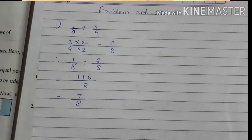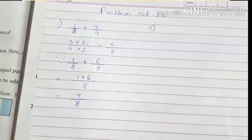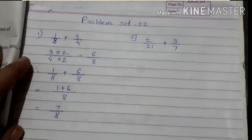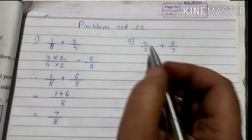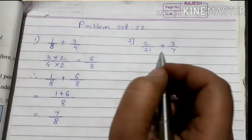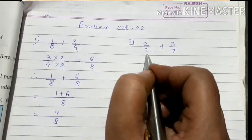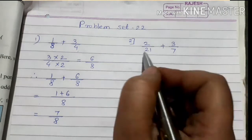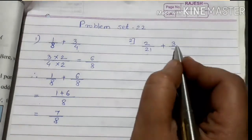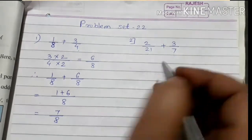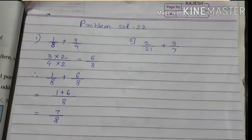Understood everyone? Now let's see the second one: 2 upon 21 plus 3 upon 7. The denominators are 21 and 7. Since 7 is smaller than 21, we check — is it possible to convert 7 to 21? Yes, because 21 is in the 7 times table: 7 threes are 21.